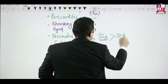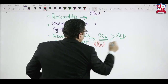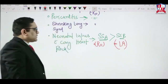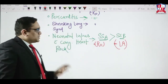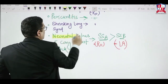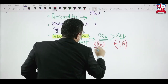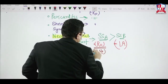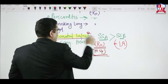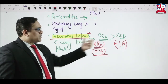SSA is also called Ro antibody and SSB is also called La antibody. For neonatal lupus, Ro antibody (Sjögren's syndrome A antibody) is the most specific answer when the examiner asks which antibody is most specific for neonatal lupus.